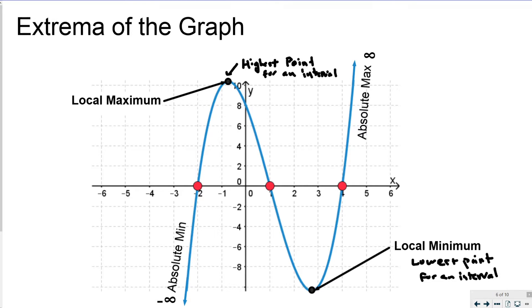And then we also have the absolute max here and the absolute min. For a graph such as a cubic, the absolute max and the absolute min are both going to be infinity and negative infinity respectively. Because these graphs have ranges that are infinite. They're all the real numbers. Any number that we can think of will be on this graph at some point.